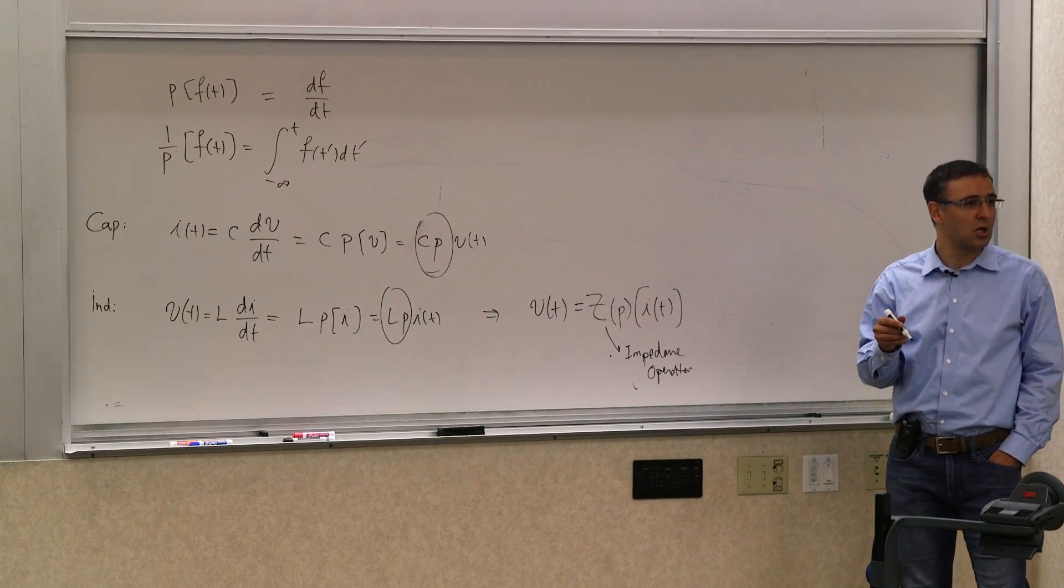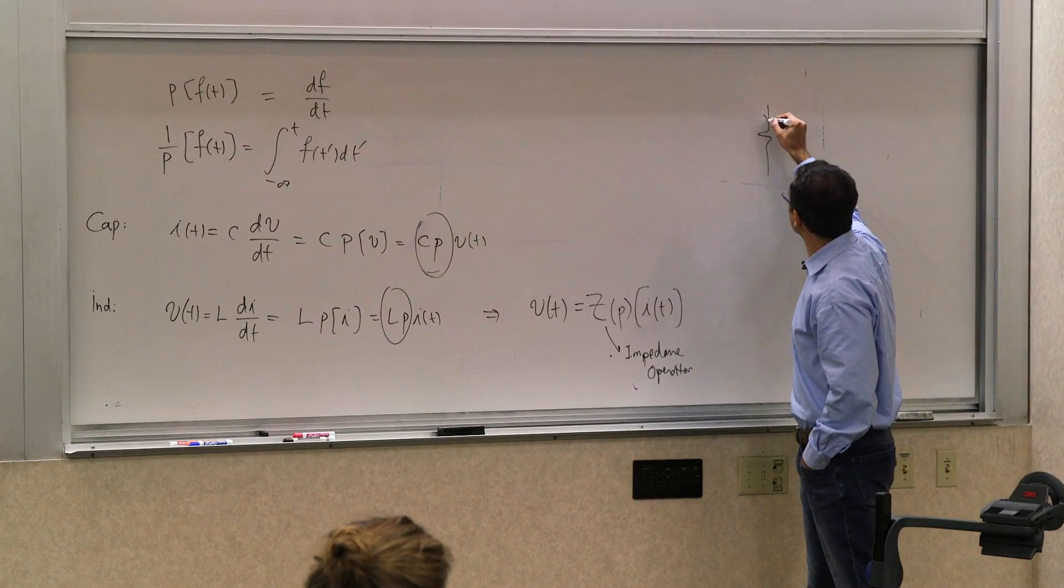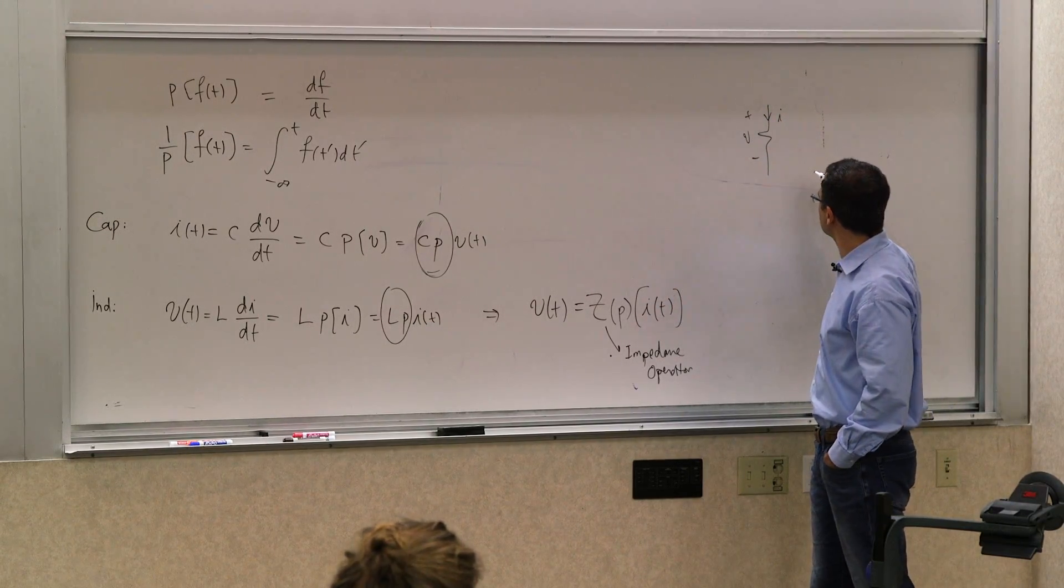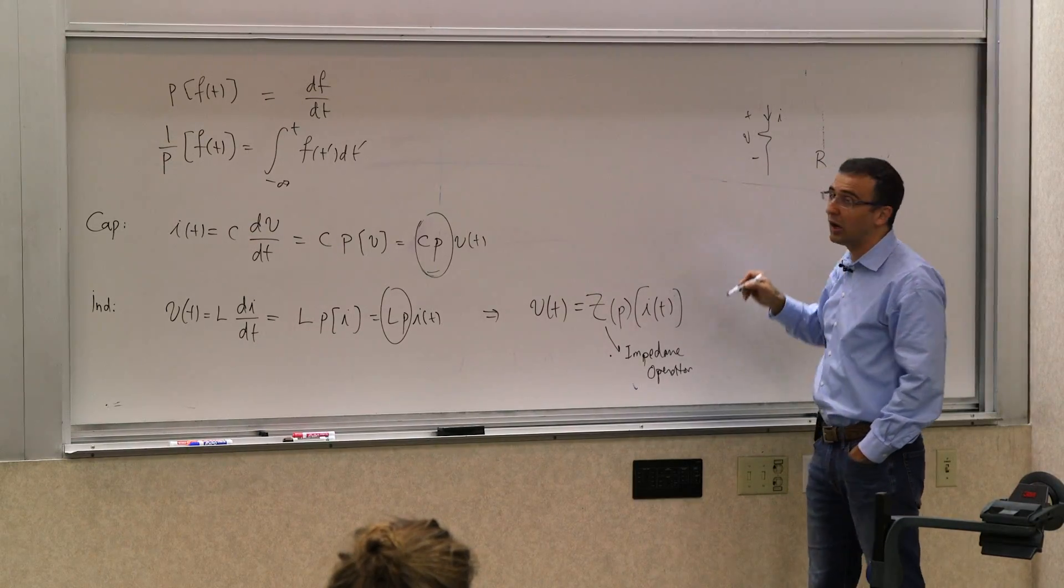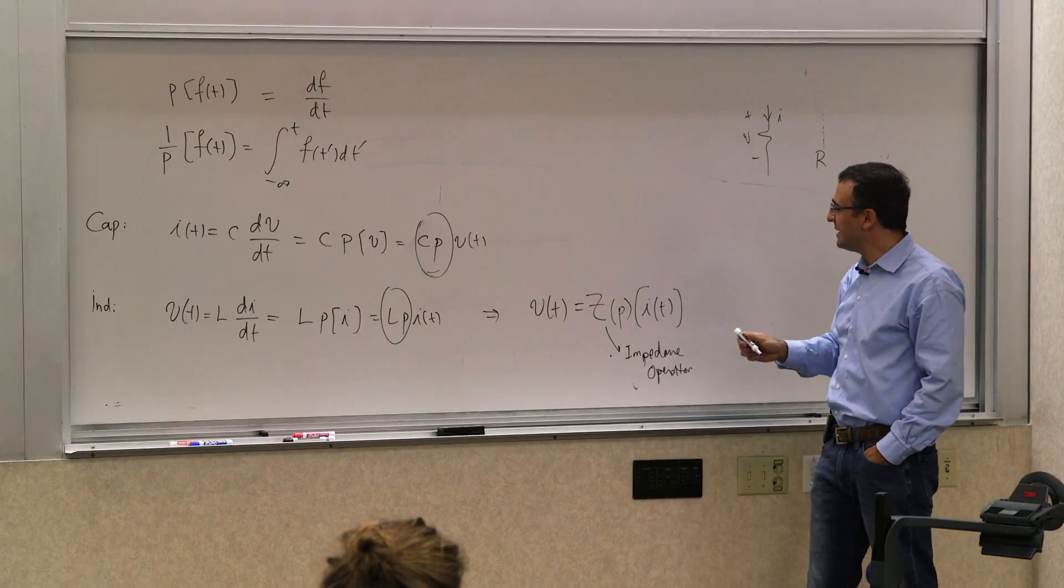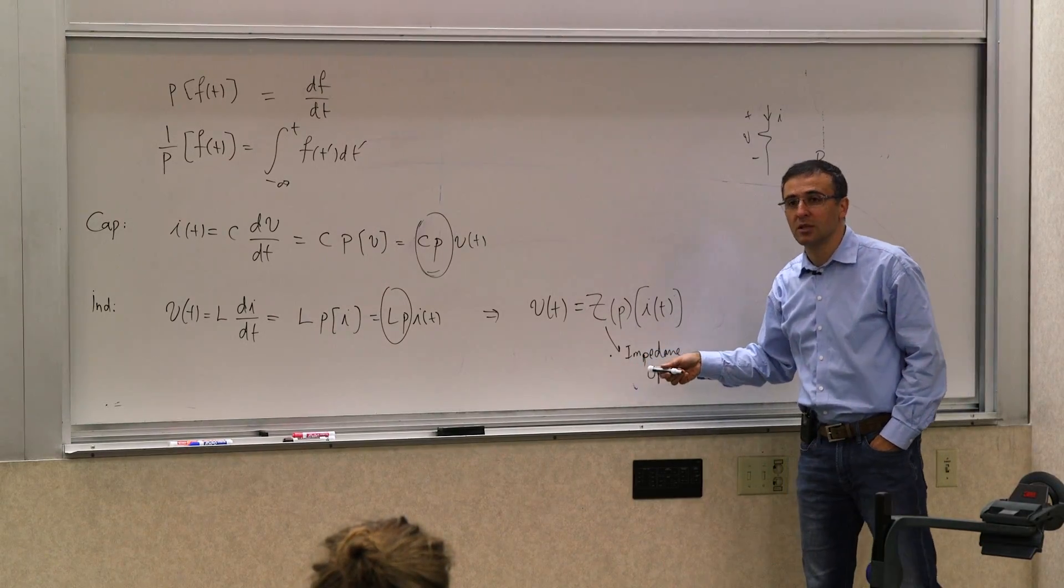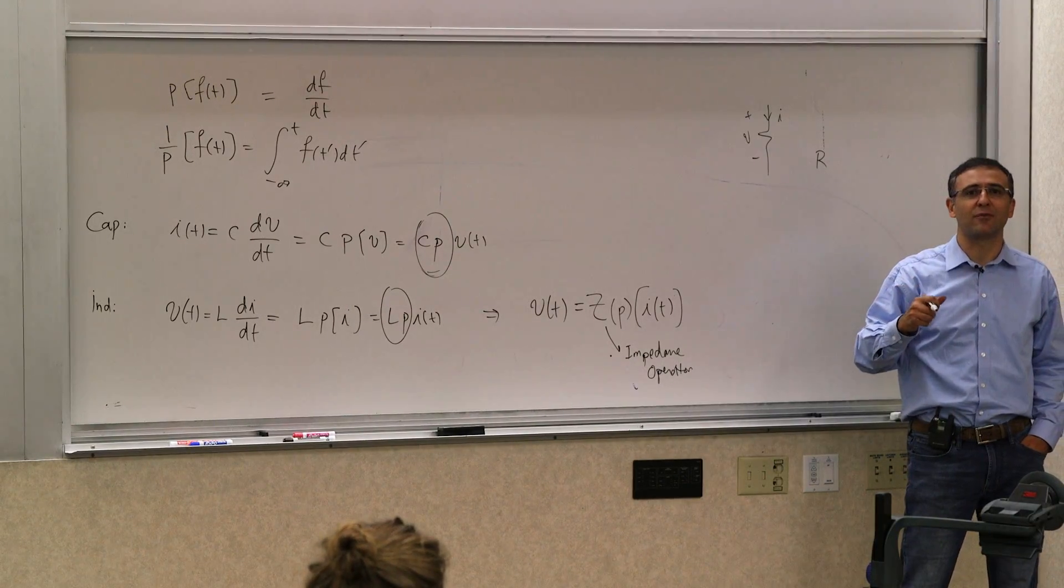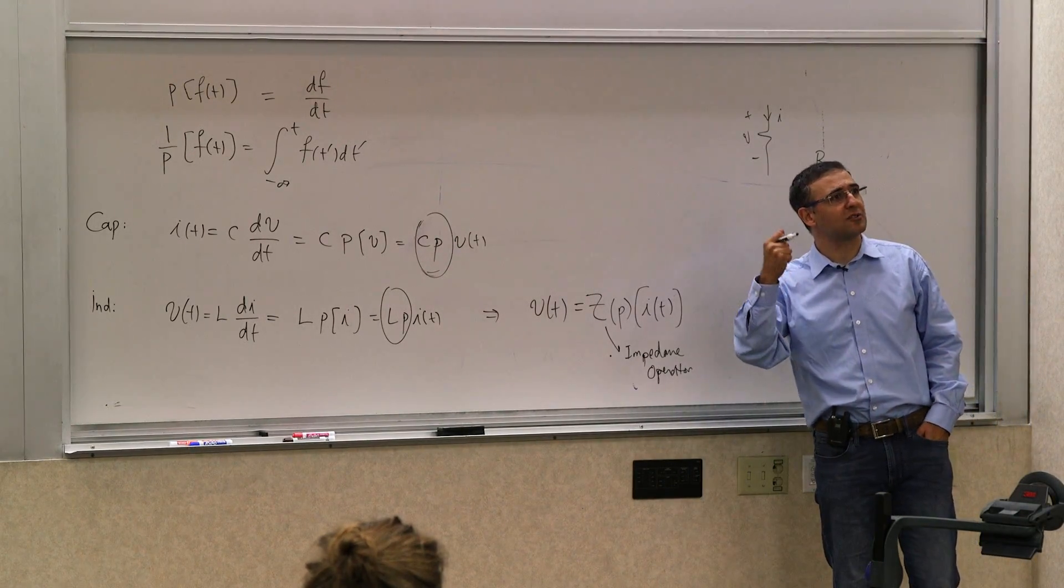If you just have a resistor, this operator is going to be a scalar function. If you have a resistor with a current and voltage i and v, this operator is going to be simply a scalar, a constant r. So impedances are generalized forms of resistors.